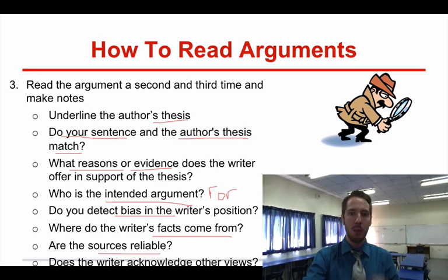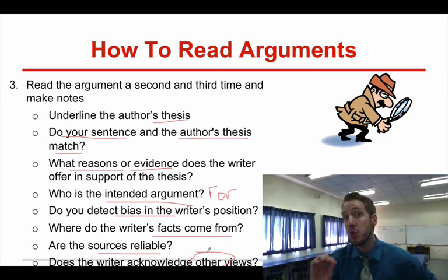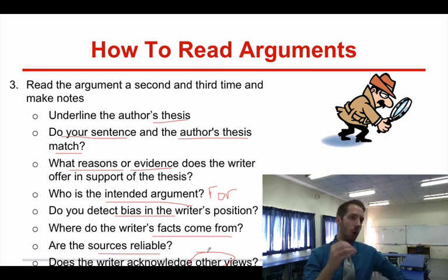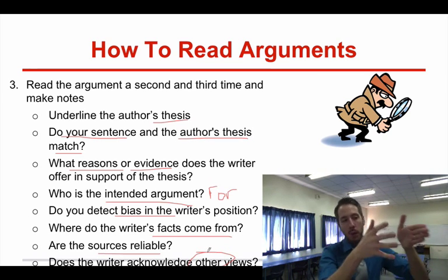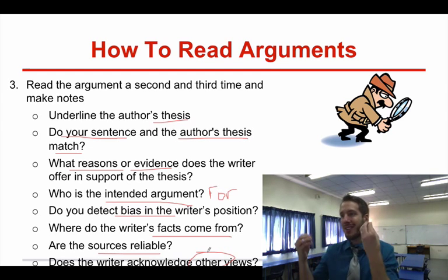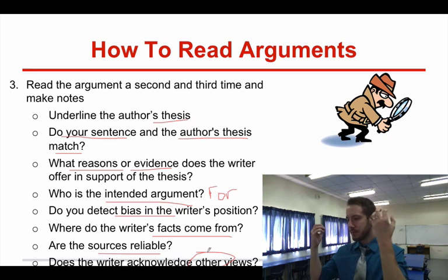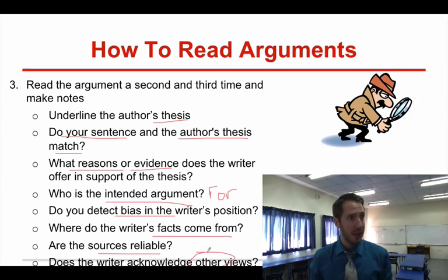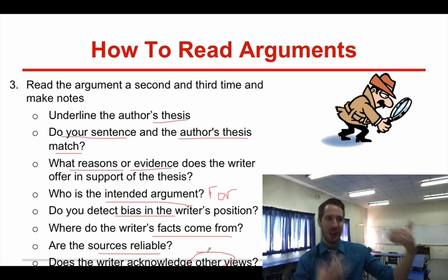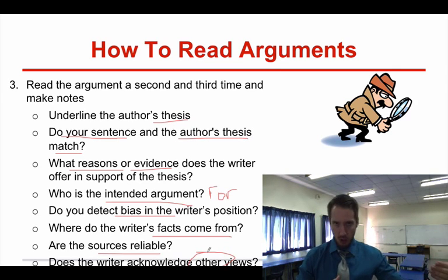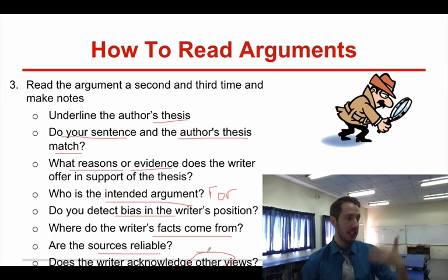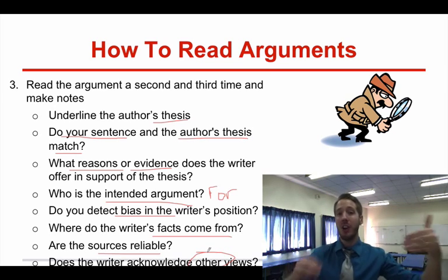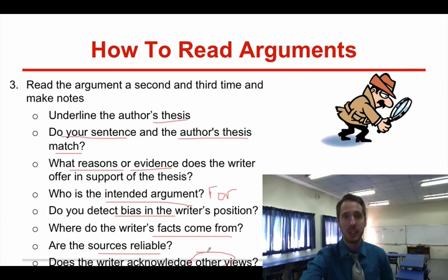Another really important thing: does the writer acknowledge other views? If they're only talking about one perspective and not giving any credit to counterarguments, that's a problem. Most arguments are valid to some degree — you have to recognize the opposition of your argument to really lend credibility to what you're saying and get your reader to trust you. Are they acknowledging those other views?